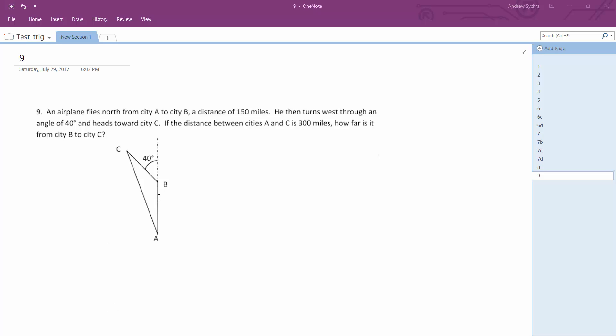So what we have here is an airplane that flies from City A to B. This ends up being 150 miles, that flies from City B to C. It turns and heads at an angle west of 40 degrees. And we know that from A to C it's 300 miles, but what we want to know is how far is it from B to C.